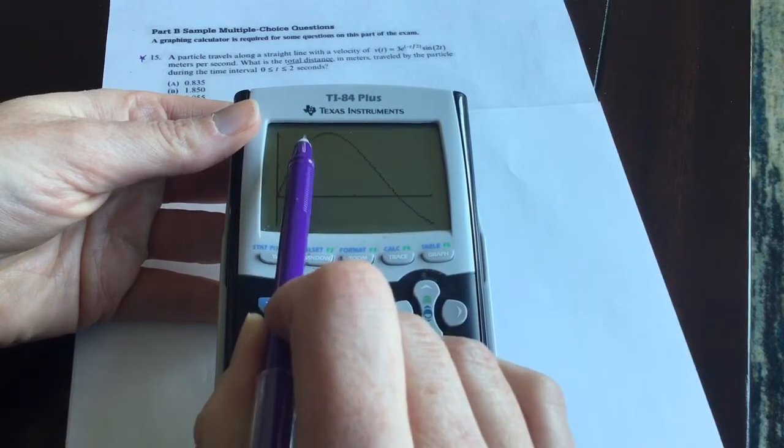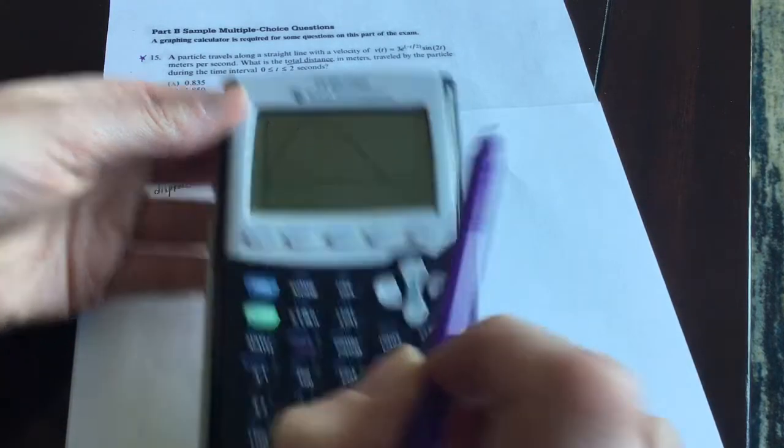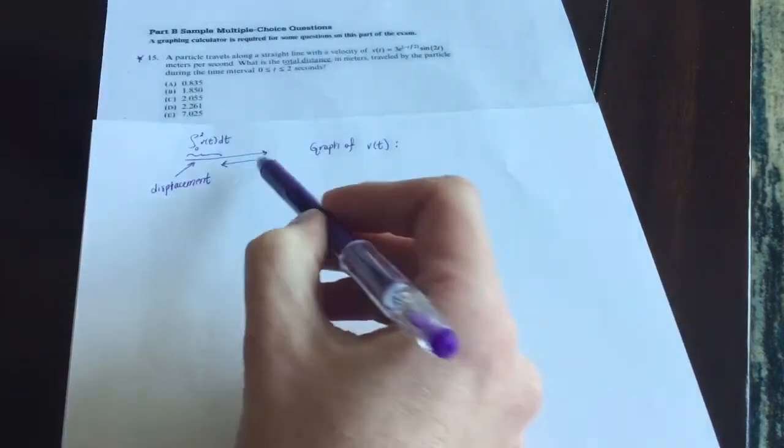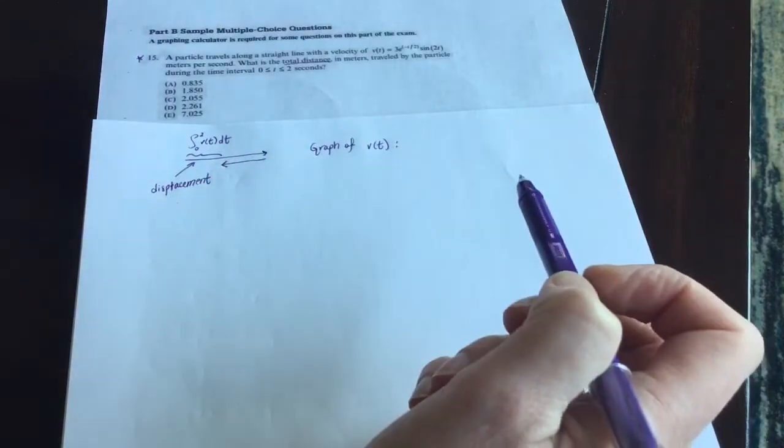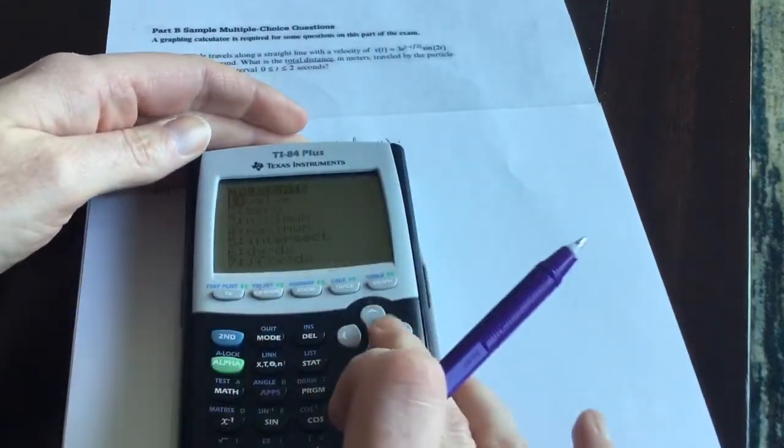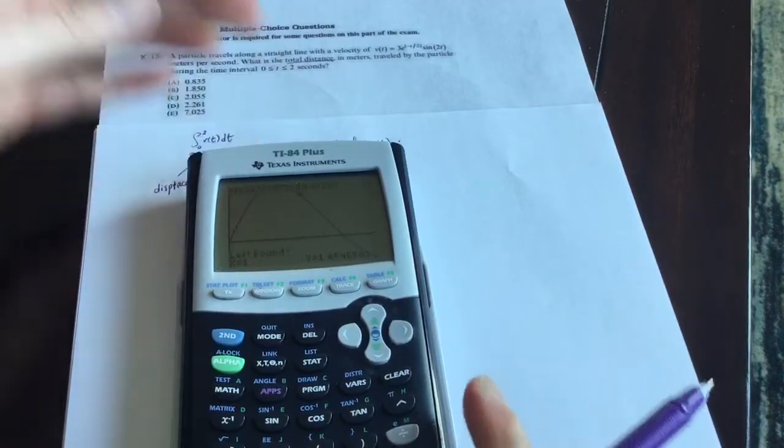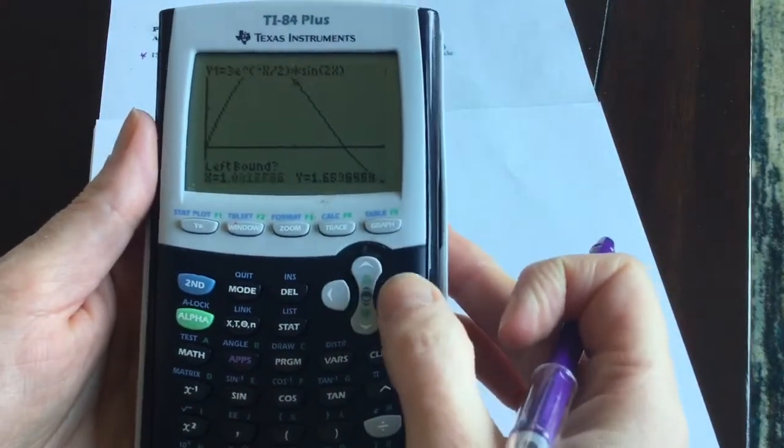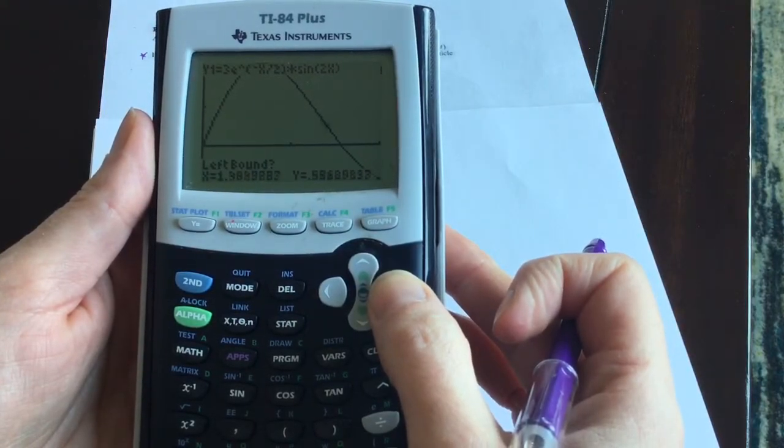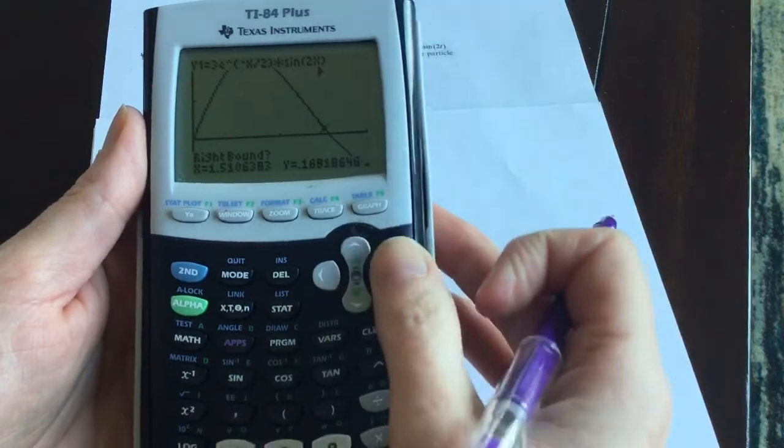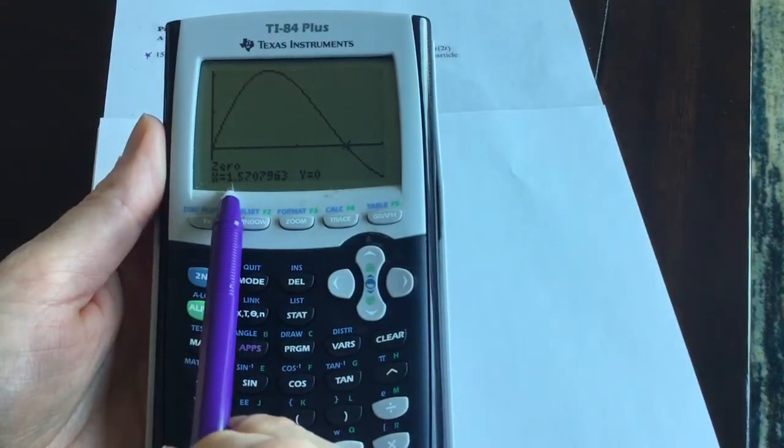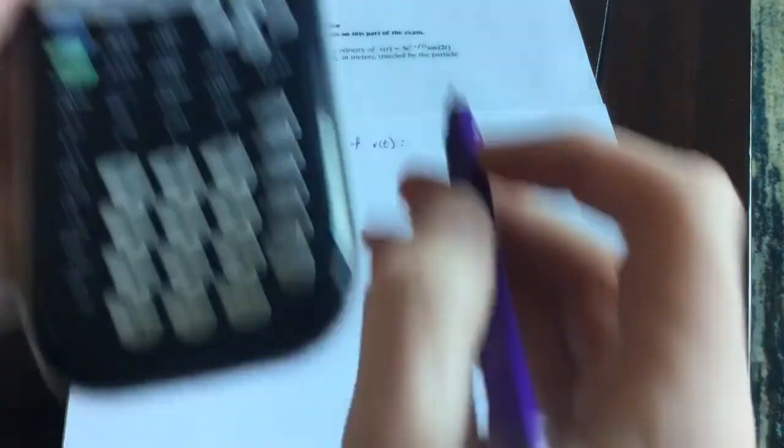Just to be clear, when your velocity is positive, that would be the part where your particle was moving forward. And then when your velocity is negative, that would be the part when your velocity is going backwards. So let's use the zero feature. And then go a little bit to the left.